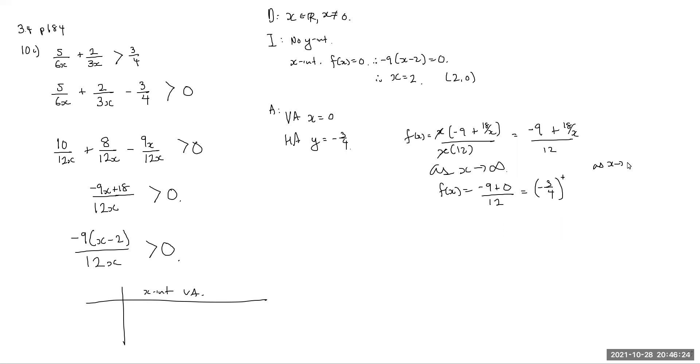As x approaches negative infinity, f of x is going to be negative 3 over 4, but it's going to subtract by a 0 there by making this negative number even bigger than it already is. So it's going to be more negative than it was before. And now we do the chart method.